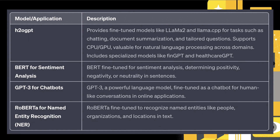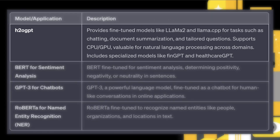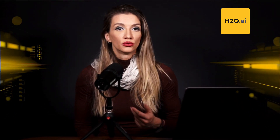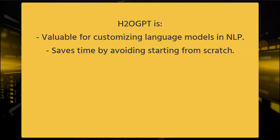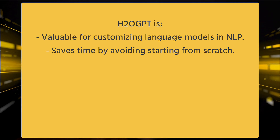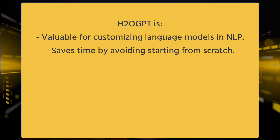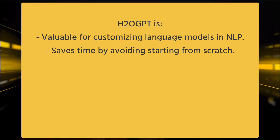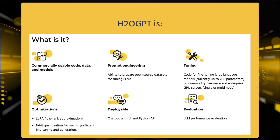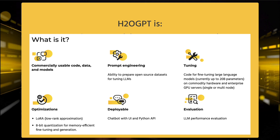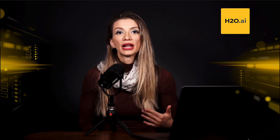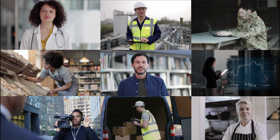Examples of openly available pre-trained models fine-tuned for specific tasks include H2OGPT. The H2OGPT project provides fine-tuned models like LLaMA2 or LLaMA.cpp that are designed for tasks such as chatting, summarizing documents, or answering questions tailored to specific needs. It offers support for both CPU and GPU, making it efficient for training on different hardware. This open-source implementation is highly valuable for various natural language processing applications, allowing researchers and developers to fine-tune language models for their specific tasks without starting from scratch. The project also includes models like FinGPT, adapted to financial data, and HealthcareGPT, tailored for healthcare-related applications.